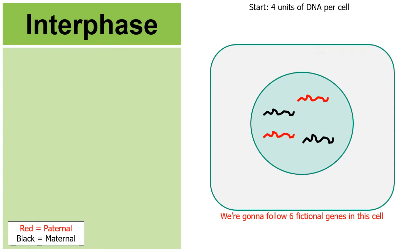In this animation we're going to follow six fictional genes in this cell. Gene A is homozygous dominant — two capital alleles. Gene B is heterozygous — one dominant, one recessive. Gene C is homozygous recessive. Gene D is homozygous dominant, gene E is heterozygous, and gene F is heterozygous. In a real cell we have thousands — humans have about 21,000 to 22,000 genes among our 46 units of DNA.